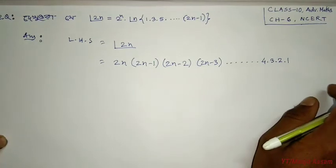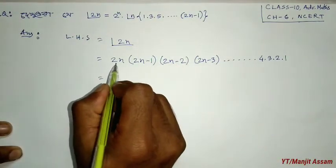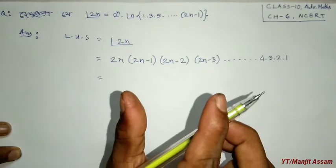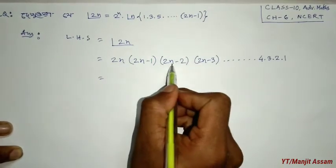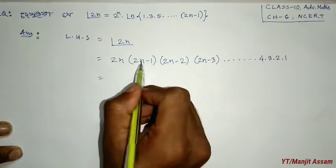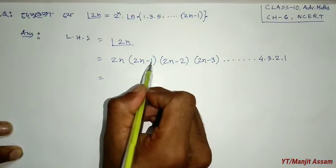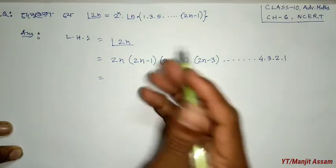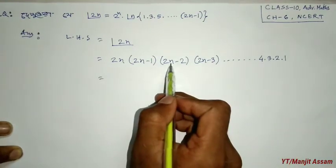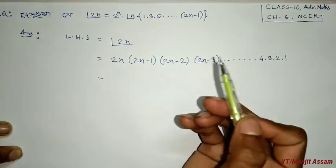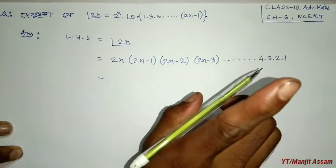Now, it is clear that in this expansion, 2n, (2n minus 2) etc. are even numbers, and the remaining terms are odd numbers. We separate the even numbers and the odd numbers — keeping the odd numbers aside and grouping the even numbers together.